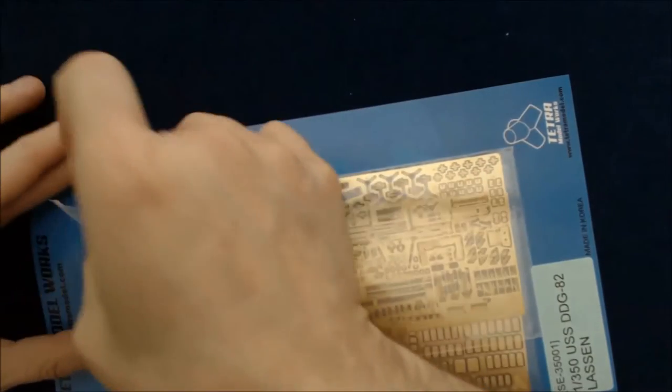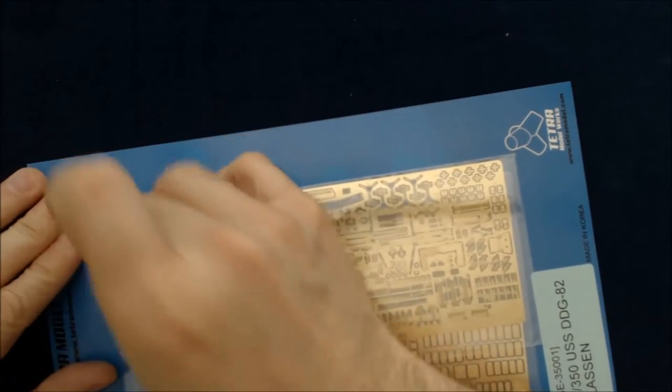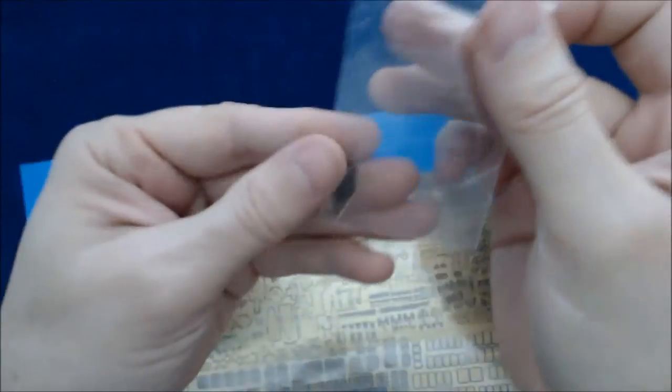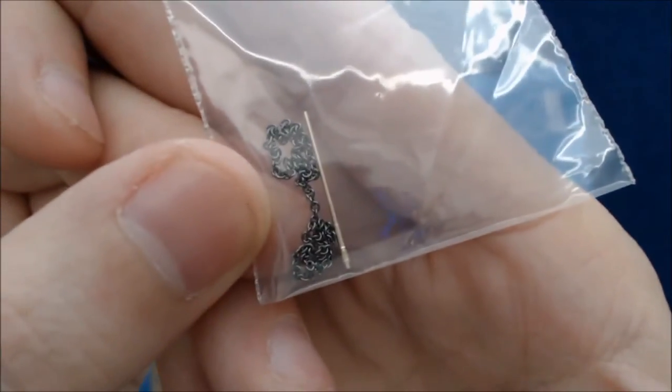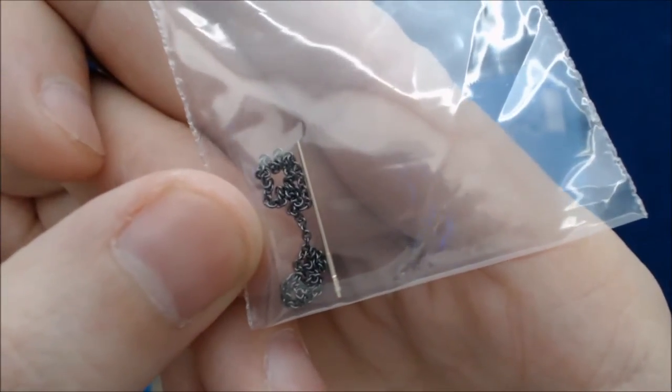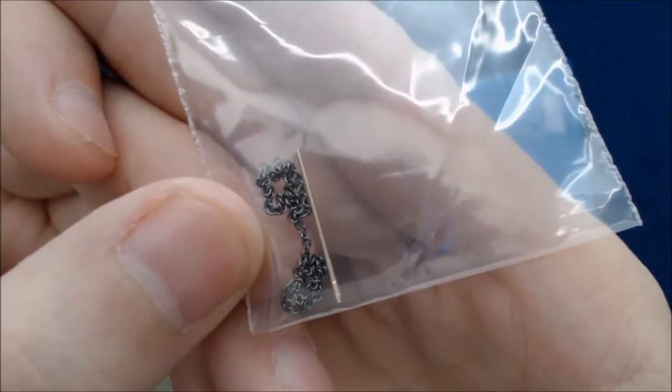Again, here's a small, make sure I don't damage anything here, a small bag with a chain and some kind of long metal pin. And my camera does not want to cooperate. There we go. It looks like it might even be a gun, a metal gun.